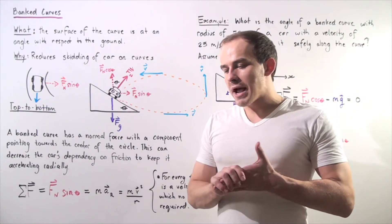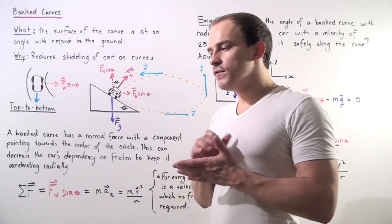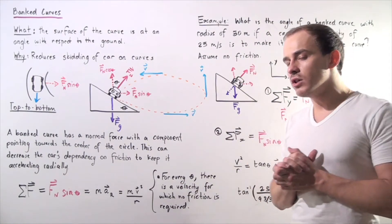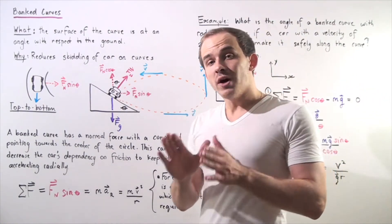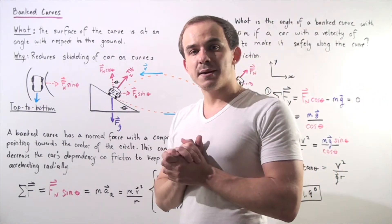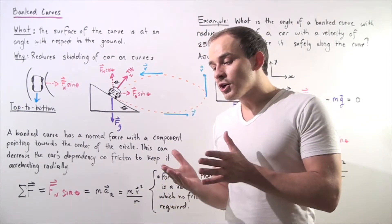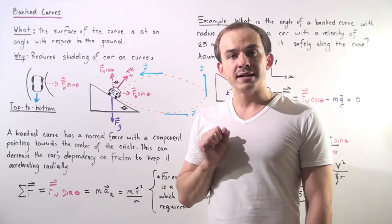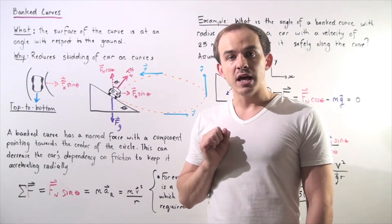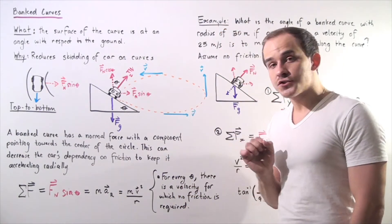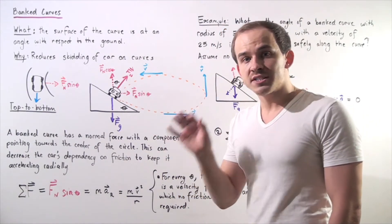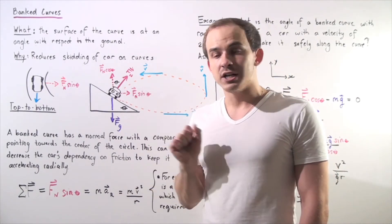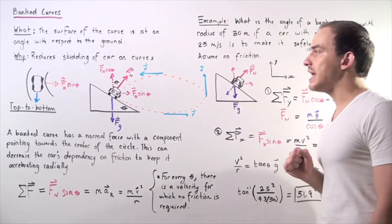Now let's talk about cars moving along bank curves. A bank curve has a surface that is at an angle with respect to the ground. We use bank curves to decrease the car's dependency on friction, as we'll see in just a moment.